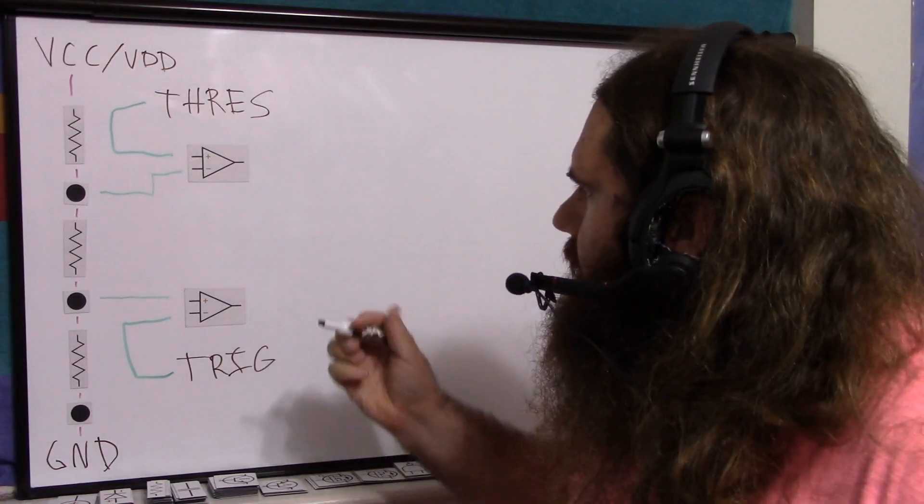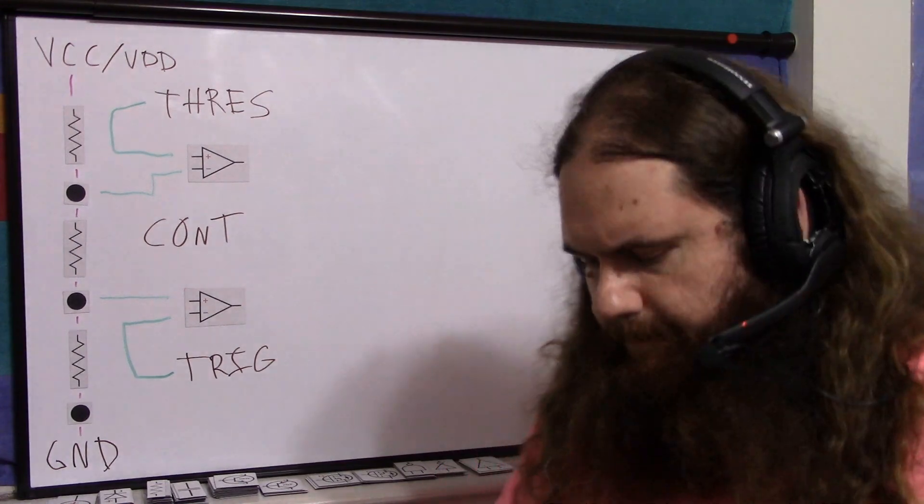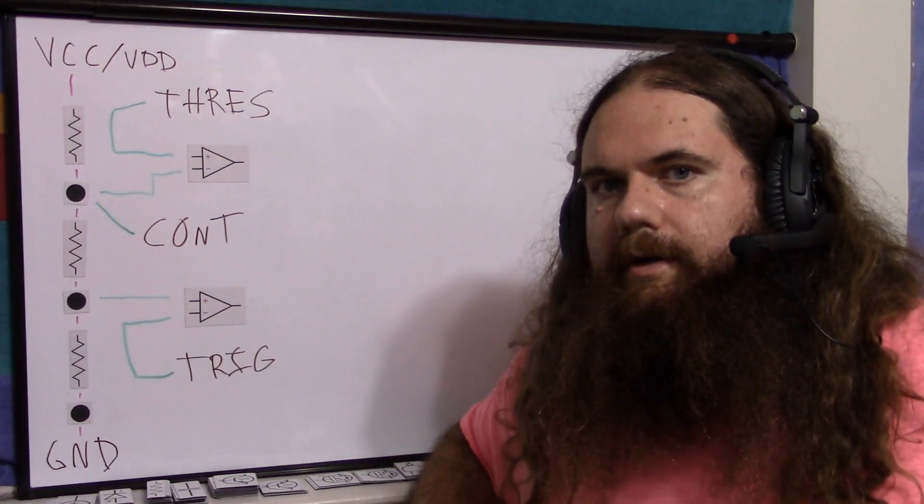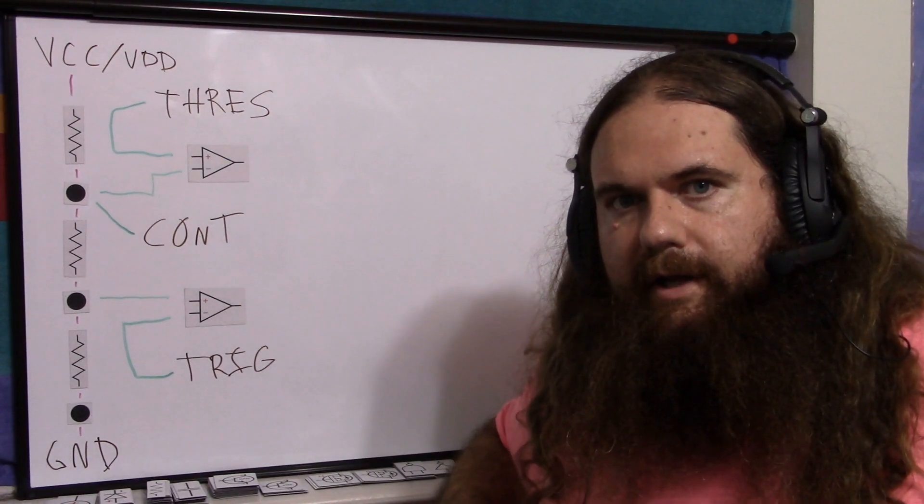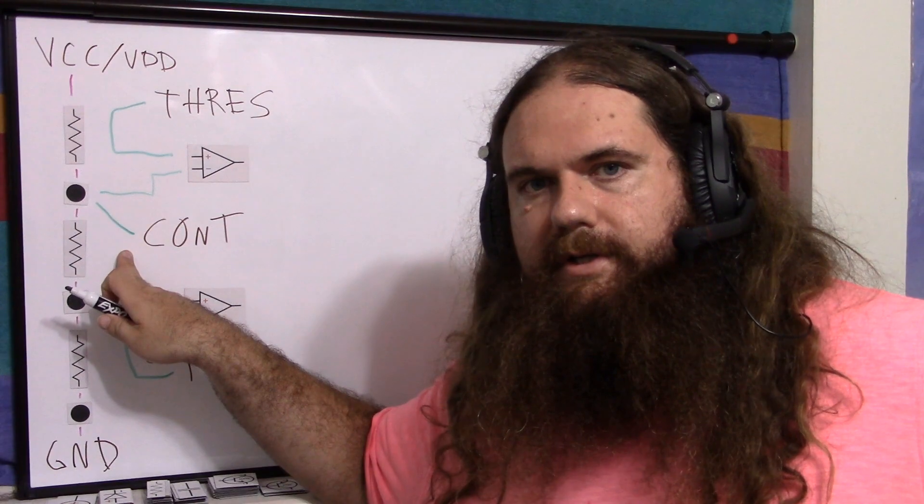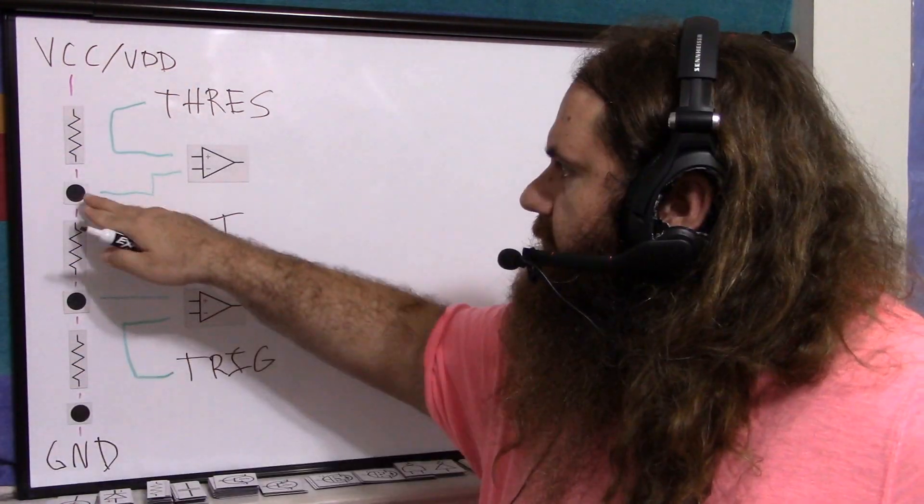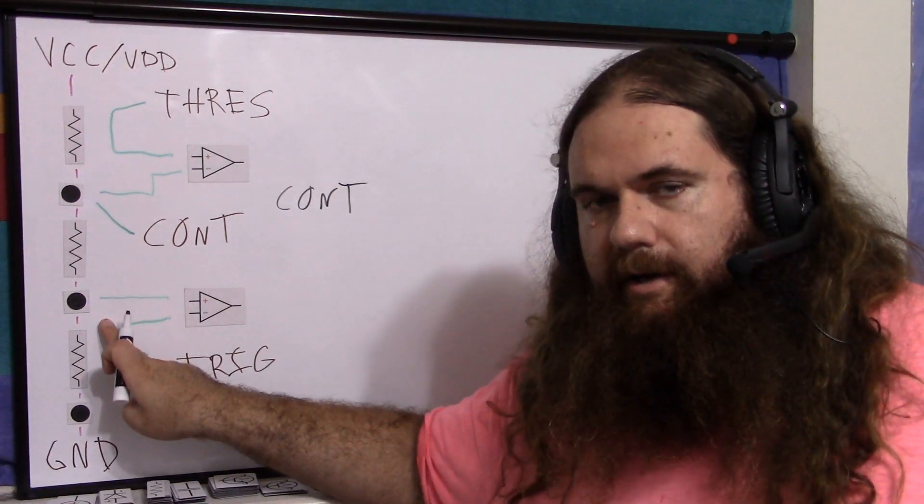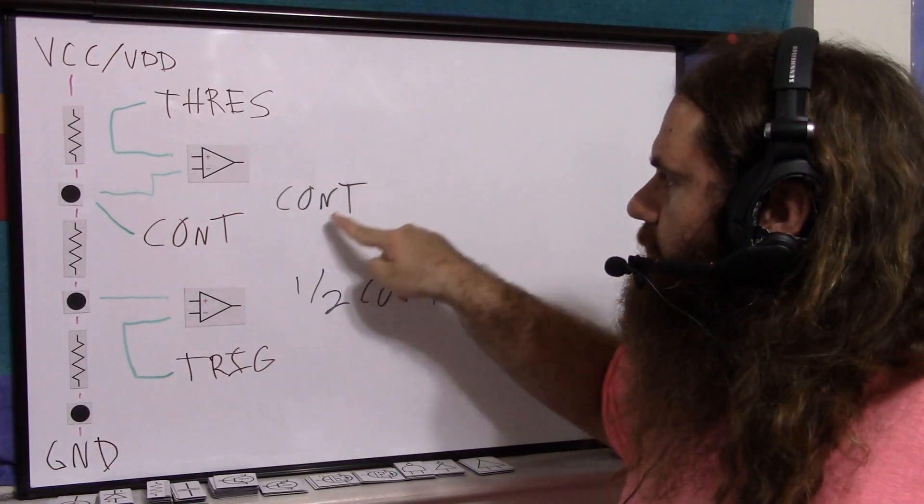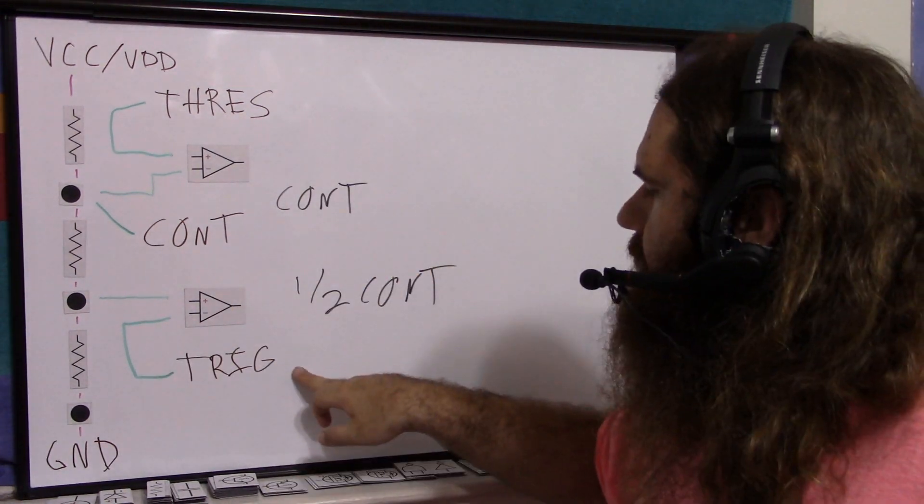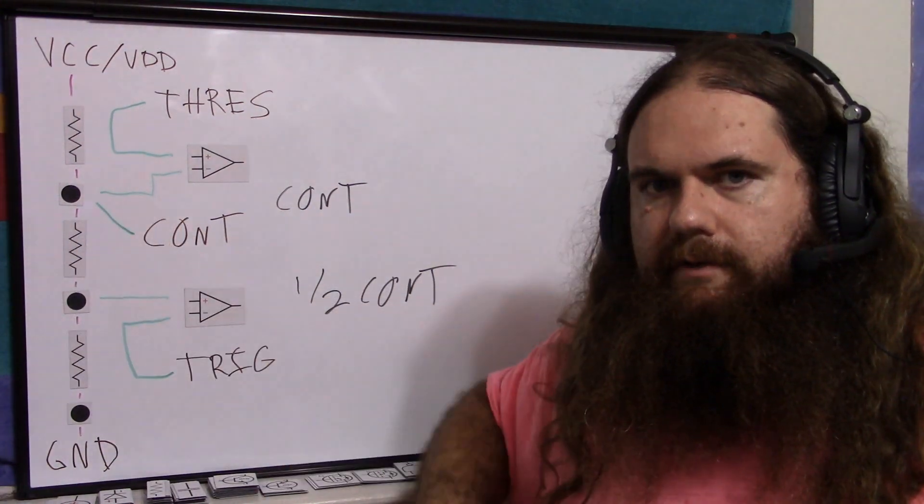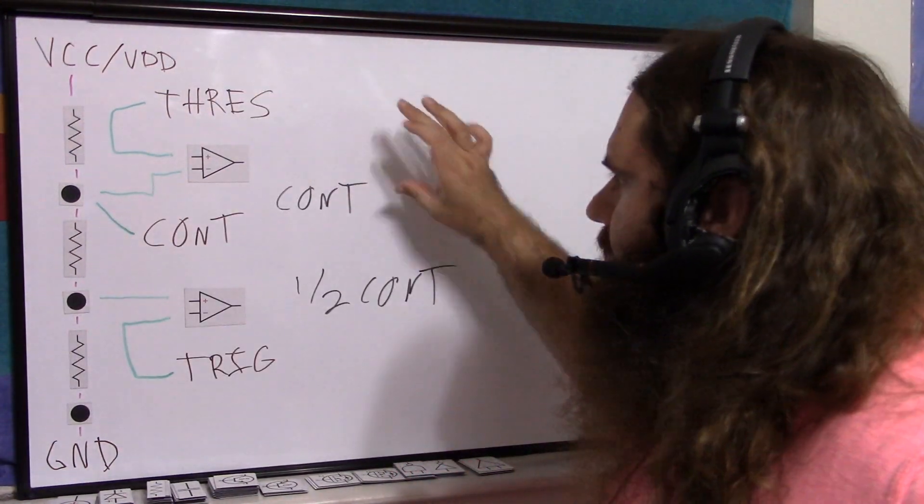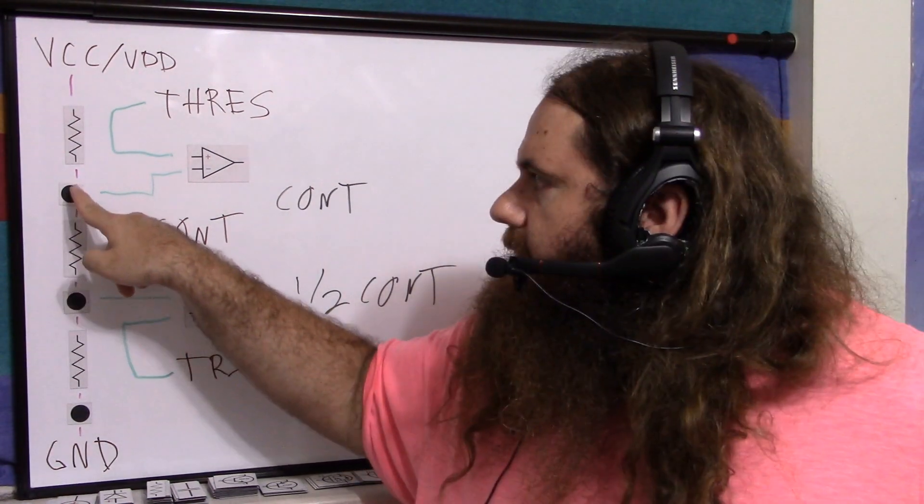Now there's another sneaky pin called control. That connects here to the two-thirds point. Control is a way for you to override this voltage divider. So normally, the voltage divider is just between the positive and negative voltages, the VCC and ground. But if you put a voltage on control, then instead of doing that, it says okay, this point is control. So this voltage is control, and this voltage here is half control. So threshold will be compared to the voltage you're putting in on control, and trigger will be compared to half of that, because now we've got a two-resistor voltage divider.